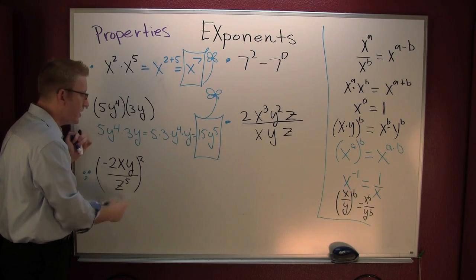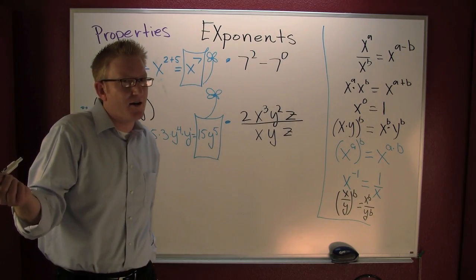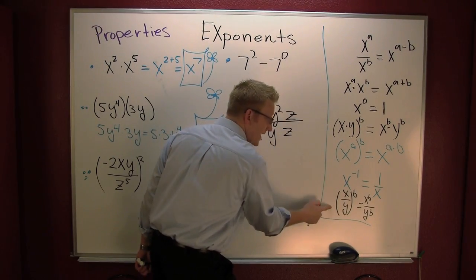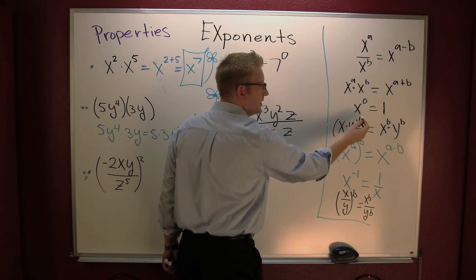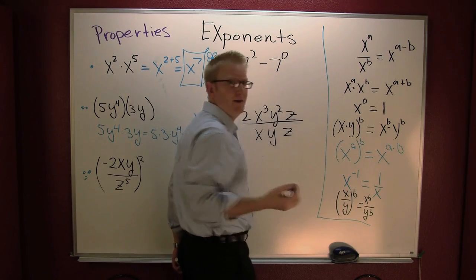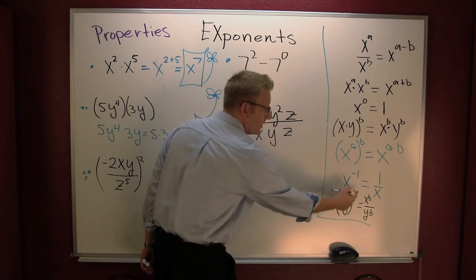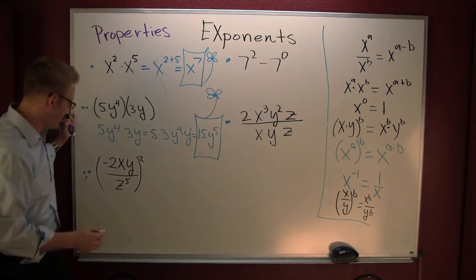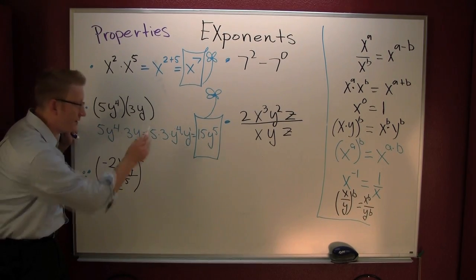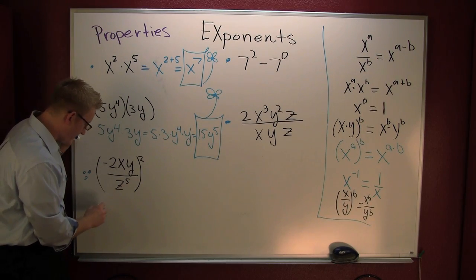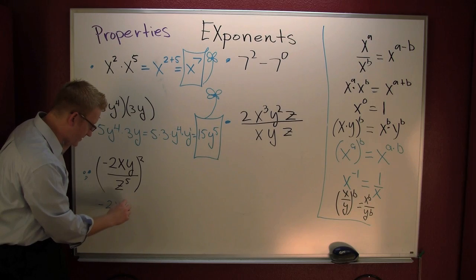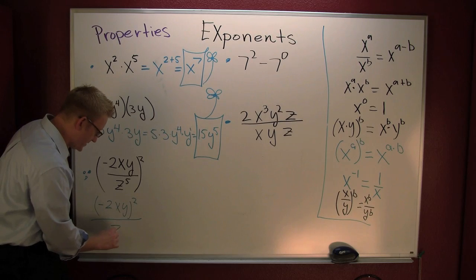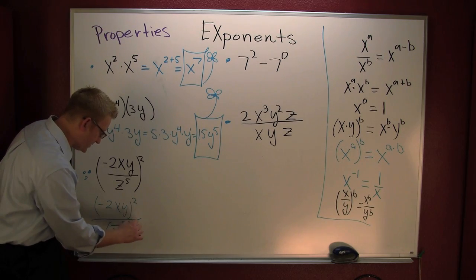This one's a fun one — a tough one. What could we do? We could expand it out. But take a look at this — I have a product raised to a power, and I have a quotient raised to a power. Let's use the quotient rule first. We have: negative 2xy squared divided by z to the fifth, all squared.